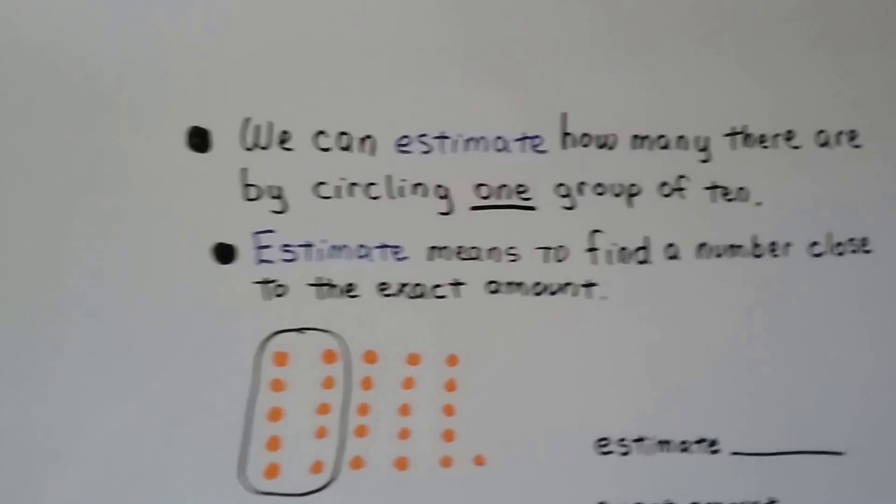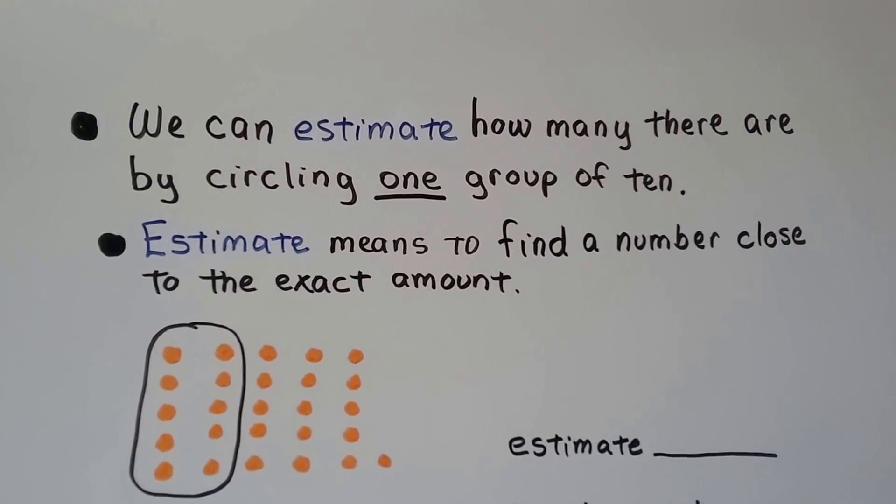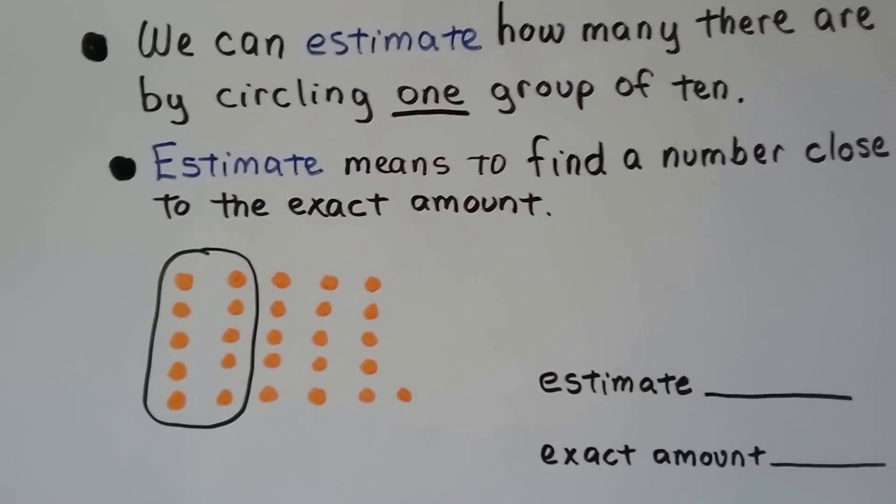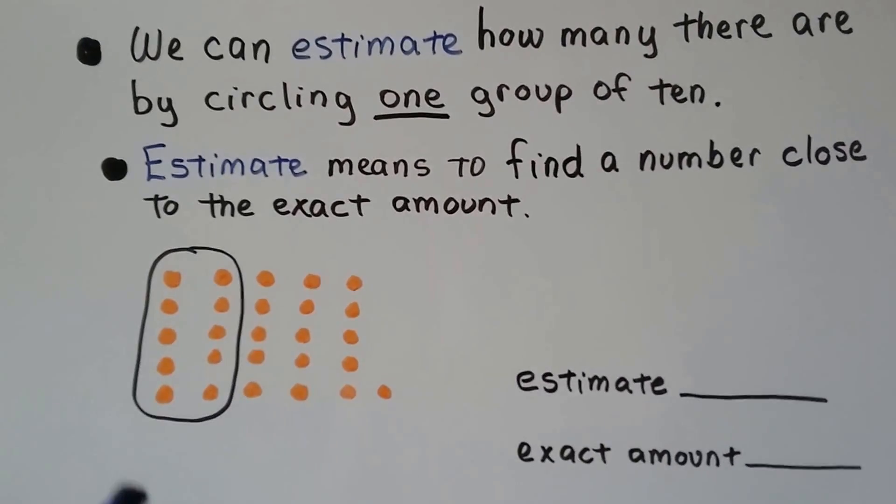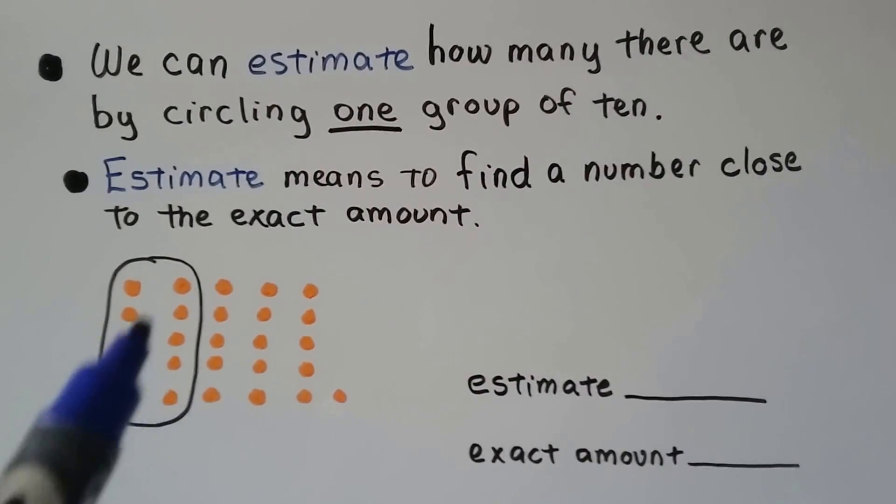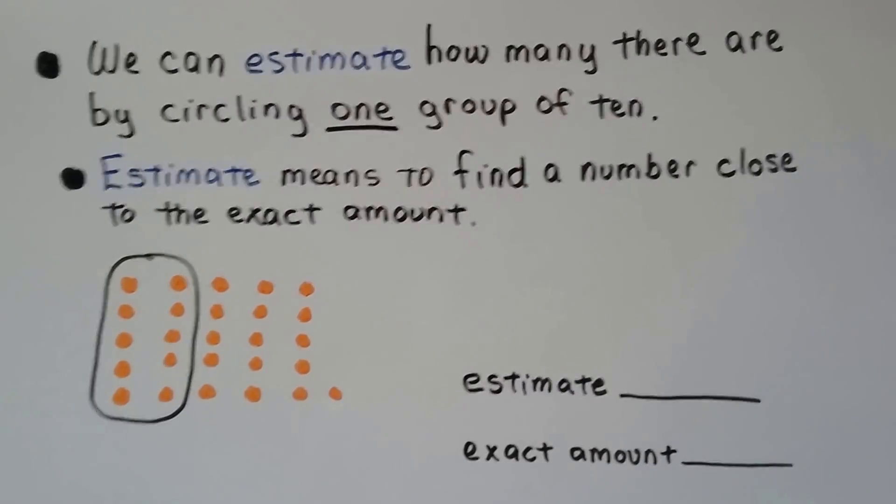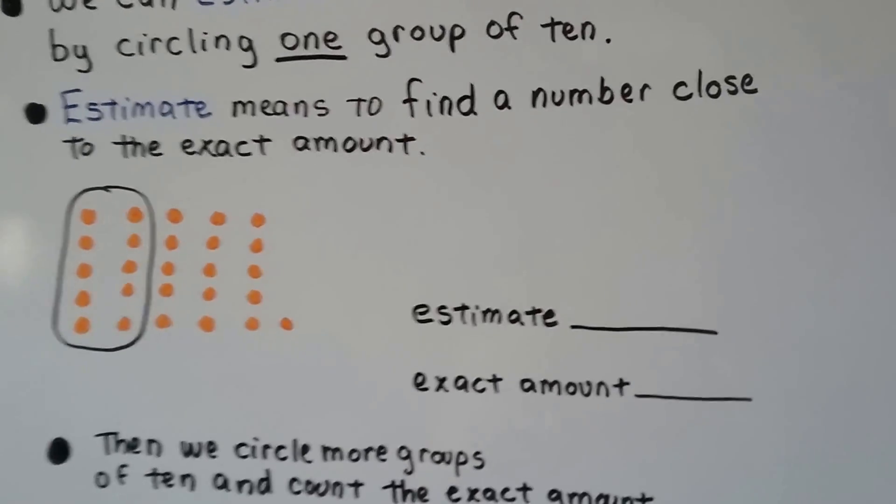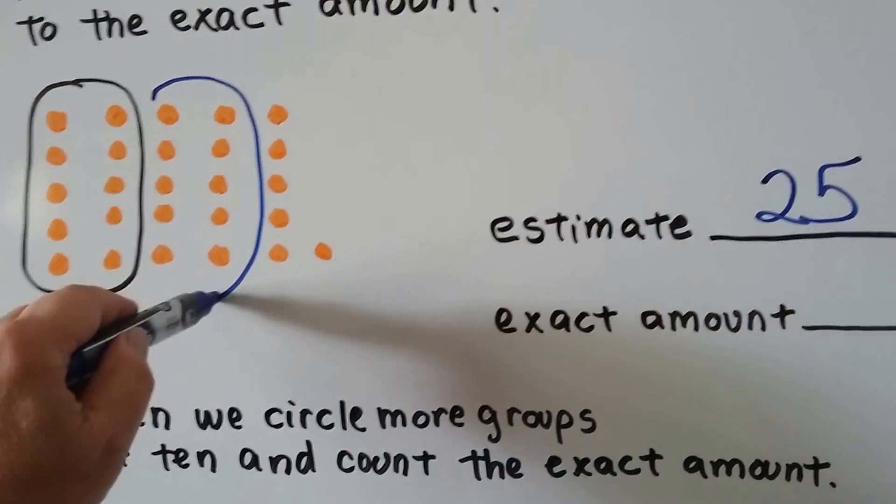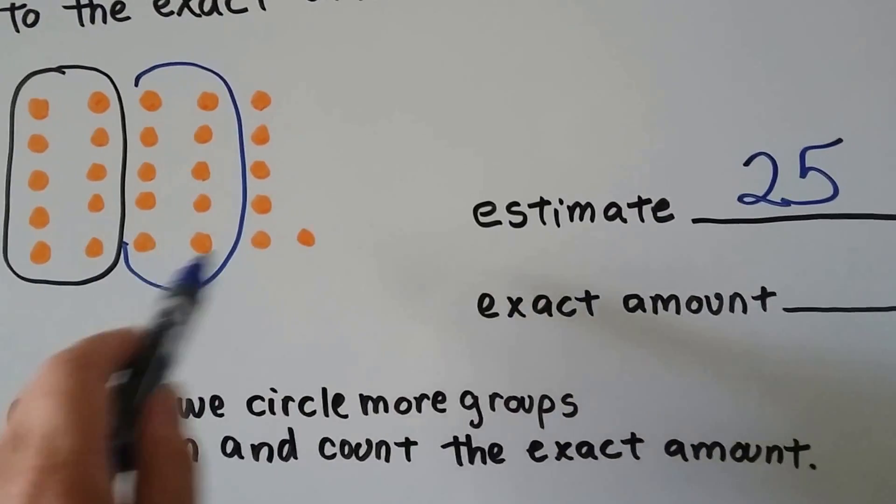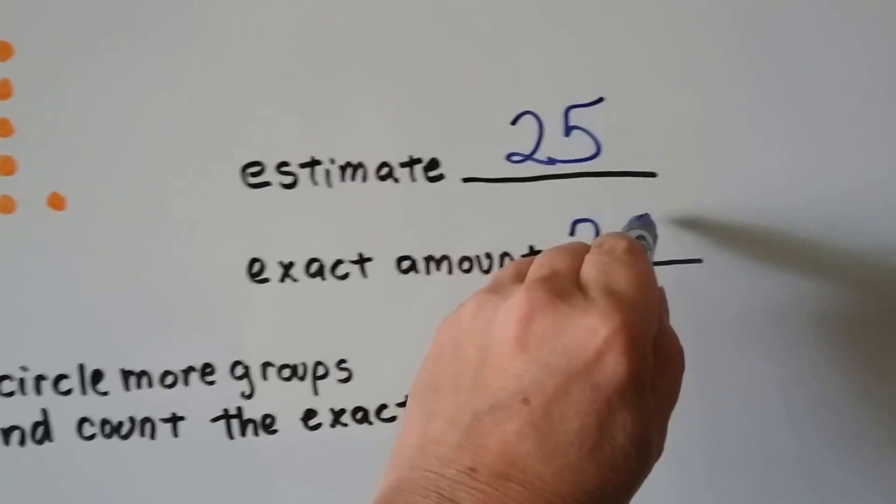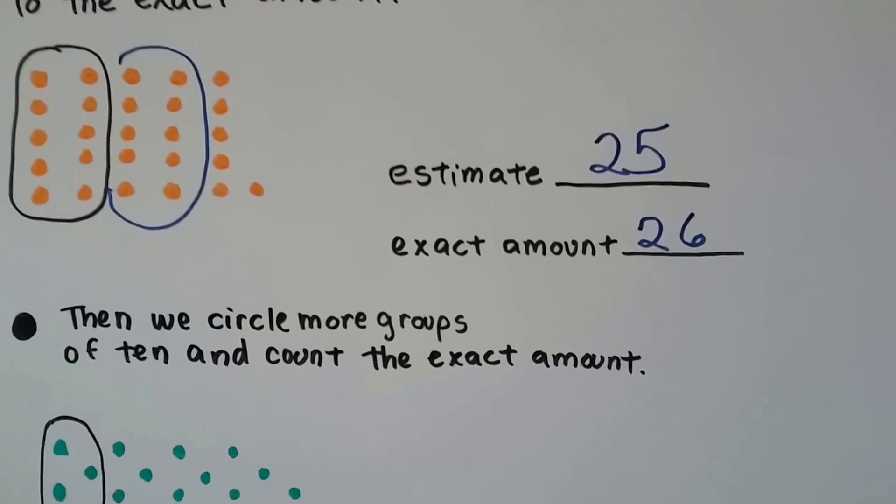We can estimate how many there are by circling one group of ten. Estimate means to find a number close to the exact amount. It's like we're guessing. So we look at all these orange dots and we circle one group of ten. Now looking at this, how many do you think could be here? Well, if that's a ten, we got about twenty-something, right? So we can estimate there's about 25 of them. When we circle our groups of ten, here's another one. We have two tens. We count our ones: one, two, three, four, five, six. So we guessed there was about 25 and the exact amount was 26.